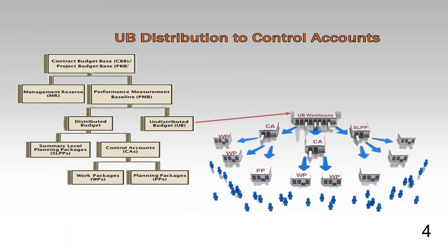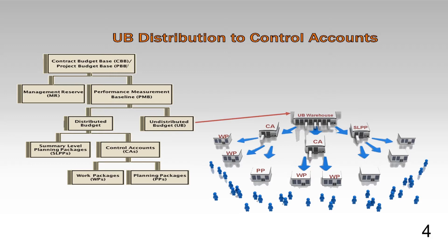Imagine the undistributed budget as boxes with specific scope and budget in each one. The illustration to the right shows a UB warehouse. When a particular box of UB is ready to be detail-planned, the box is then transported and distributed to the component of distributed budget as required, such as a control account or a summary-level planning package. As the control account manager receives the budget and scope, the CAM then proceeds with detail-planning the control account by distributing and scheduling the scope and budget into work packages and/or planning packages.